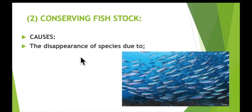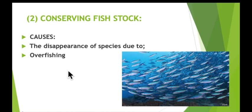The disappearance of species due to overfishing means we have to reduce the number of fish caught. That is not easy, because each country wants to make sure it gets a fair share of the fish catch. International regulations are very difficult to draw up and enforce, as everyone is worried that other countries are getting much more than they are.